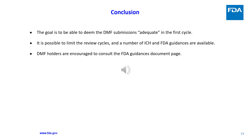Conclusion: the goal is to be able to deem DMF submissions adequate in the first cycle. It is possible to limit review cycles, and a number of ICH and FDA guidances are available. DMF holders are encouraged to consult the FDA guidances document page for support.